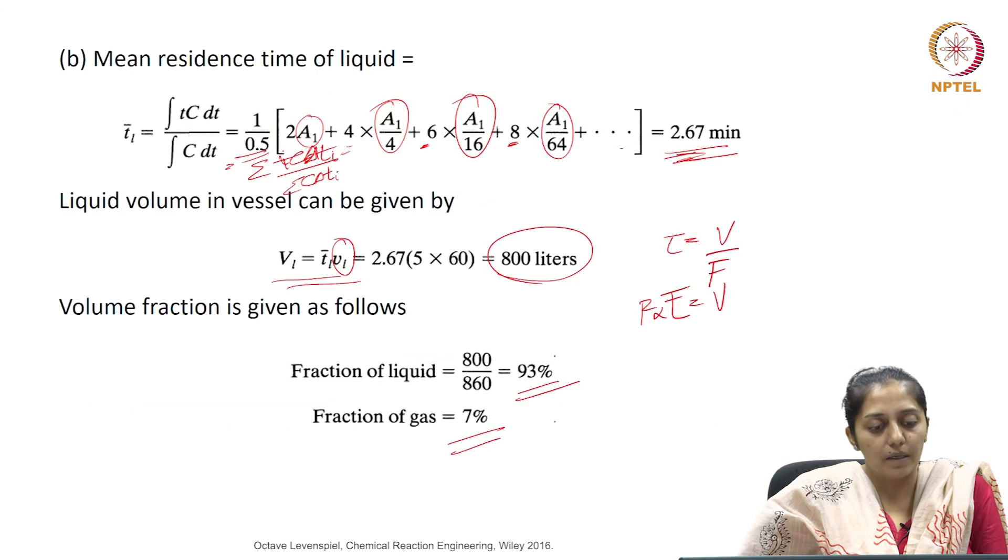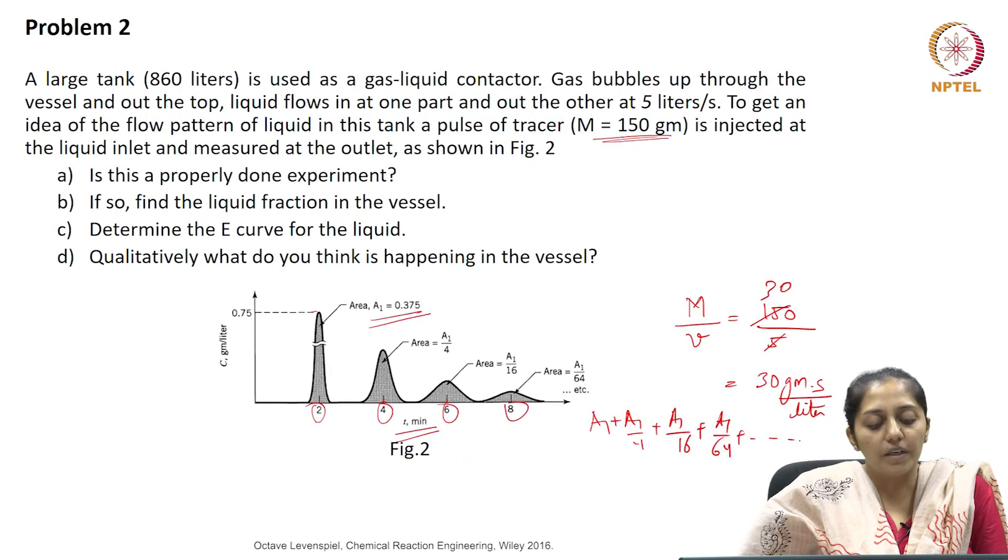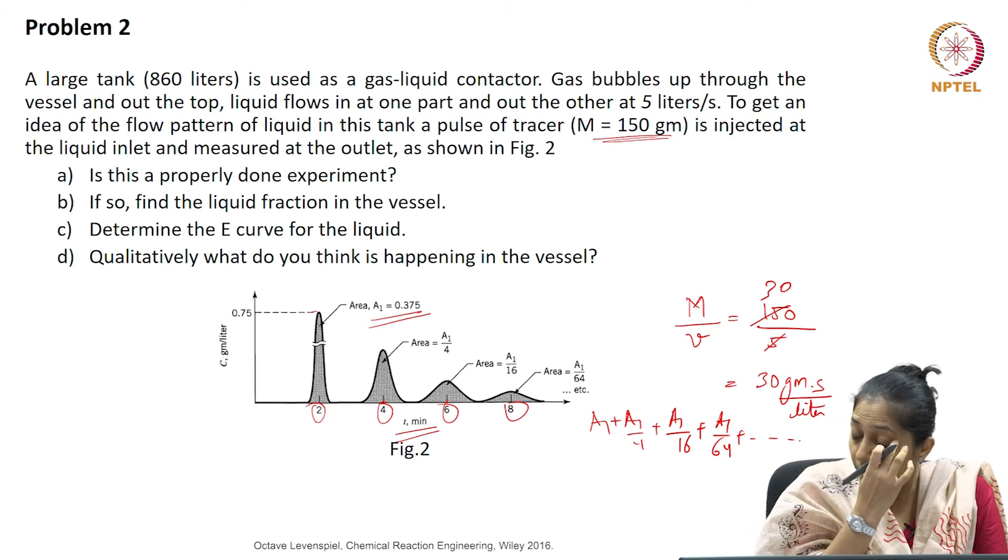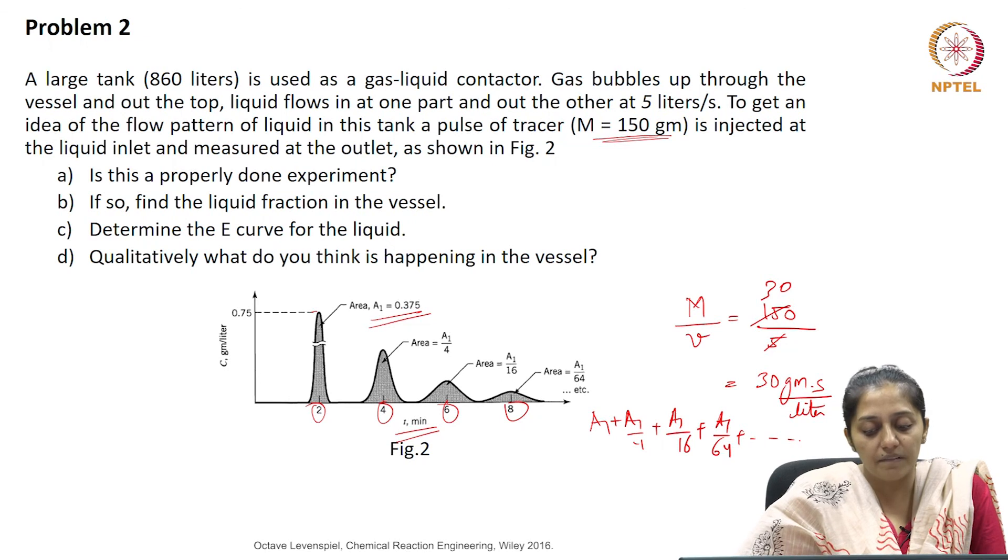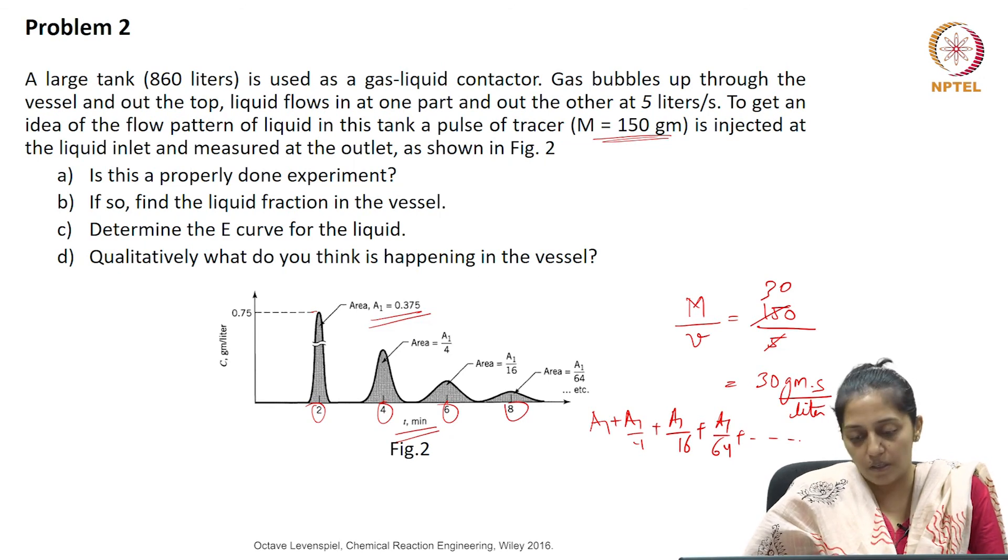The fourth part says qualitatively what do you think is happening in the vessel? If you remember, spikes coming out at small regular intervals with decreasing area or the peak is decreasing demonstrates that there is some internal recirculation happening.